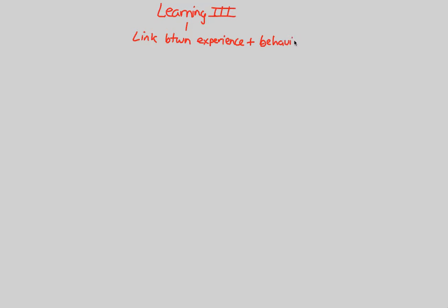In this final learning video on animal behavior, we'll look at a couple of higher-order types of learning. We'll start with something called cognition. This is a very high-order type of learning — something that we undergo many times, especially as college students. Cognition is simply defined as complex learning. It is not learning of associations or via positive-negative reinforcement, but something a lot more complex.